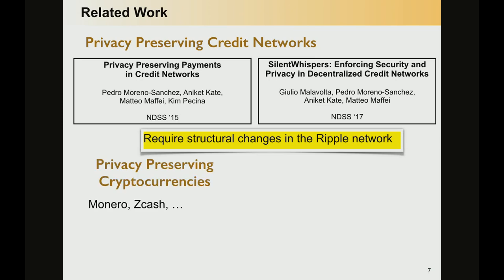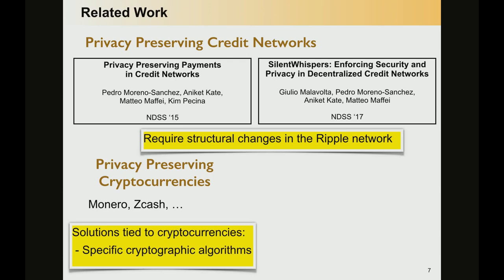Another alternative is privacy-preserving cryptocurrencies that some of you may know — examples are Monero and Zcash, but there are many others. The problem with them is that their functionality is based on cryptography and smart contracts defined for those cryptocurrencies, but we don't have them in the current Ripple network, so we cannot use the same techniques.